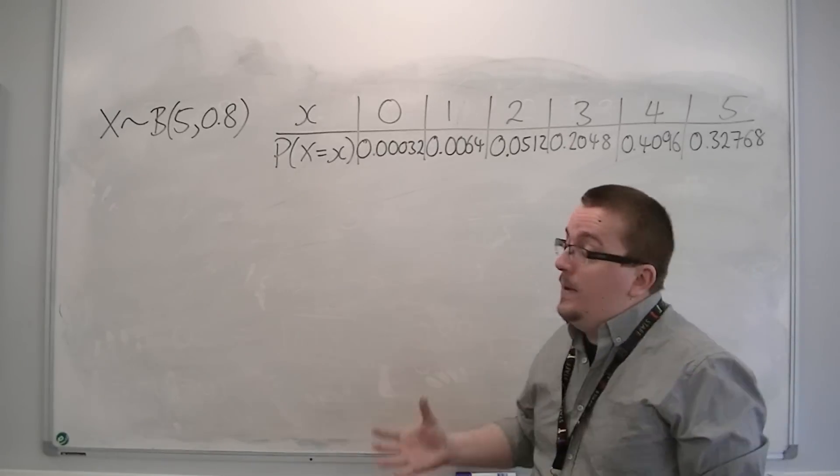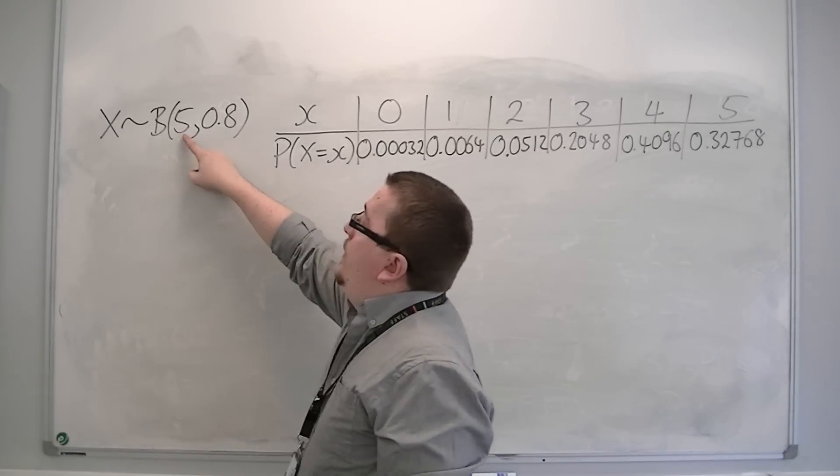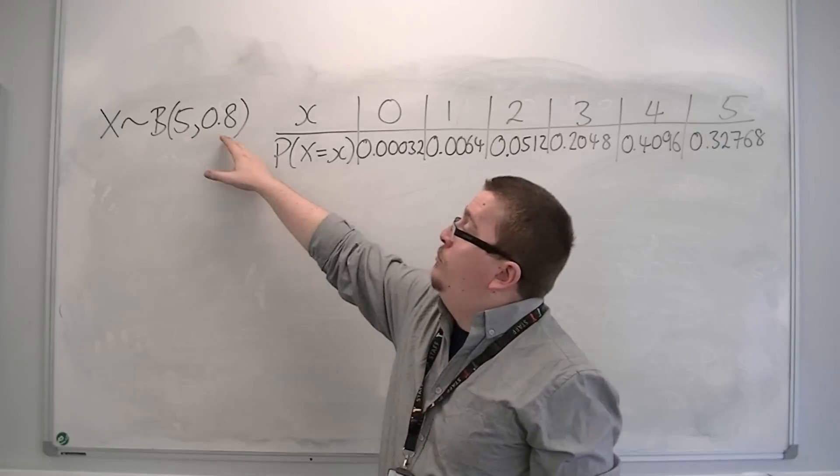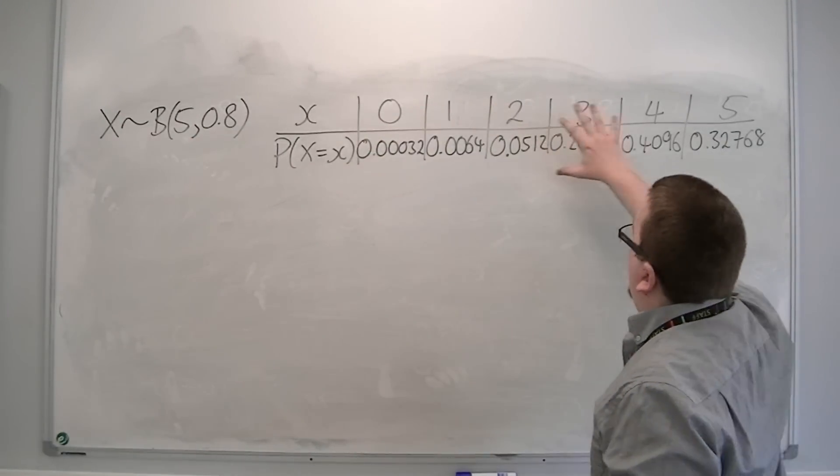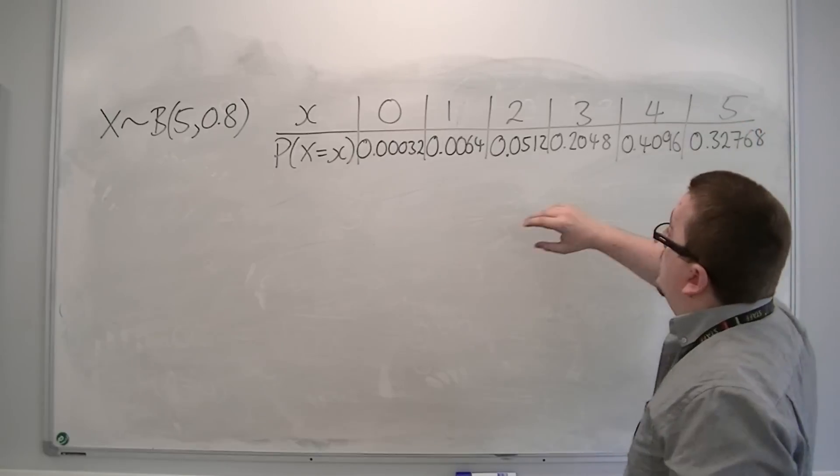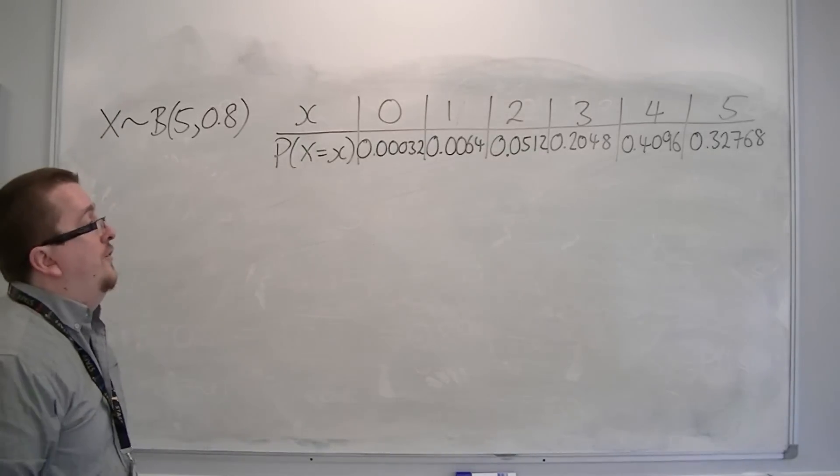Let's say, for example, that we have a binomial distribution with a number of trials 5 and a probability of success 0.8. Here is a table of the binomial distribution. It tells you the individual probabilities for each, from 0 to 5.